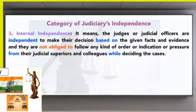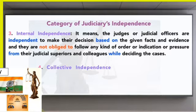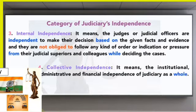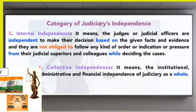According to internal independence, judges are judicial officers who are independent to make their decisions based on given facts. According to the claims and arguments, judges can take decisions. Next is collective independence — it means the institutional, administrative, and financial independence of the judiciary are all combined. This is collective independence.